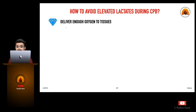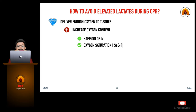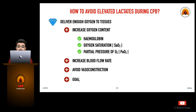To avoid elevated lactates during cardiopulmonary bypass, we can deliver enough oxygen to the tissues by increasing oxygen content — keeping hemoglobin, oxygen saturation, and partial pressure of oxygen in the normal range. We should increase blood flow rates as needed, avoid vasoconstriction, and especially adopt goal directed perfusion.